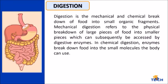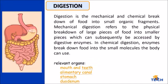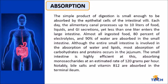Digestion is the mechanical and chemical breakdown of food into small organic fragments. Mechanical digestion refers to the physical breakdown of large pieces of food into smaller pieces, which can subsequently be accessed by digestive enzymes. In mechanical digestion, enzymes break down food into small molecules the body can use. Relevant organs include the mouth and teeth, alimentary canal, stomach, and duodenum.